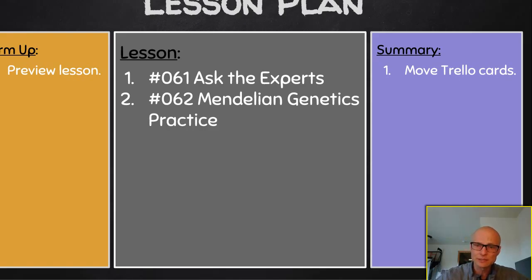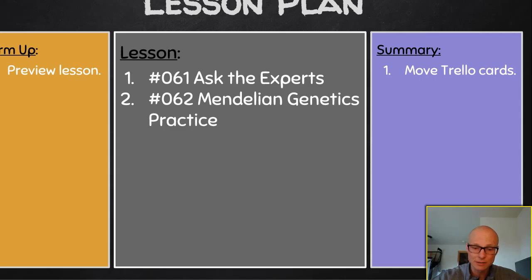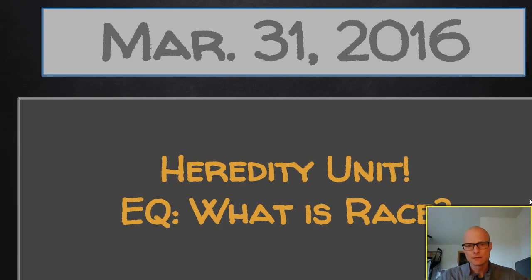Number 62 is Mendelian Genetics Practice. You should go through that really quick — it's total review and it's on paper. And that wraps up our Wednesday.